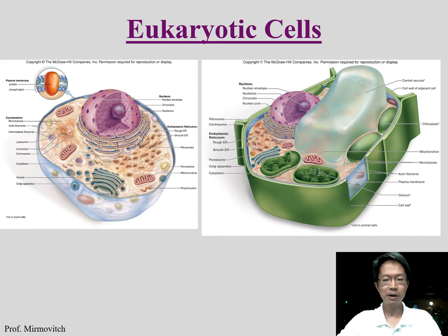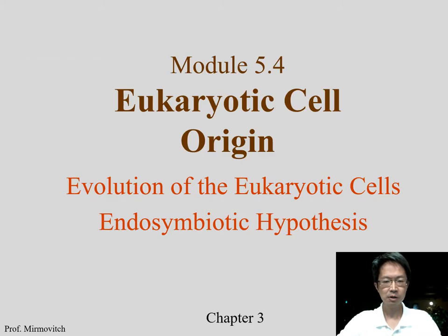This time we will talk about the origin — where the cell organelles come from. Both plant cells and animal cells have organelles that are wrapped by membranes. We'll talk about the origin, which has something to do with evolution and the endosymbiotic hypothesis.